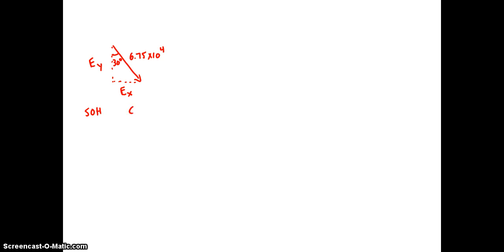So sine of 30 degrees is equal to opposite all over hypotenuse. So opposite is e x. My hypotenuse is 6.75 times 10 to the power of 4. You can rearrange. E x is equal to... Put this in our calculator and we get 3.4.